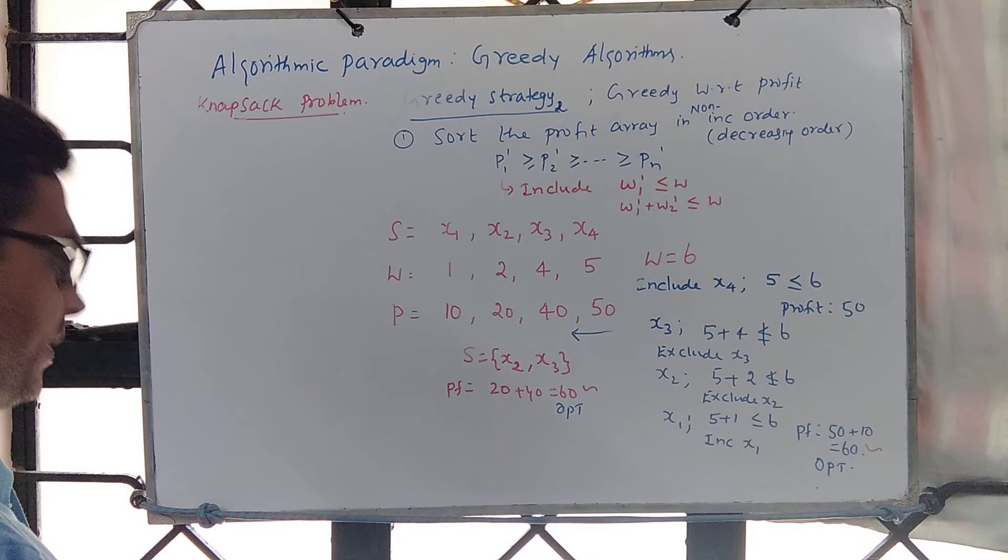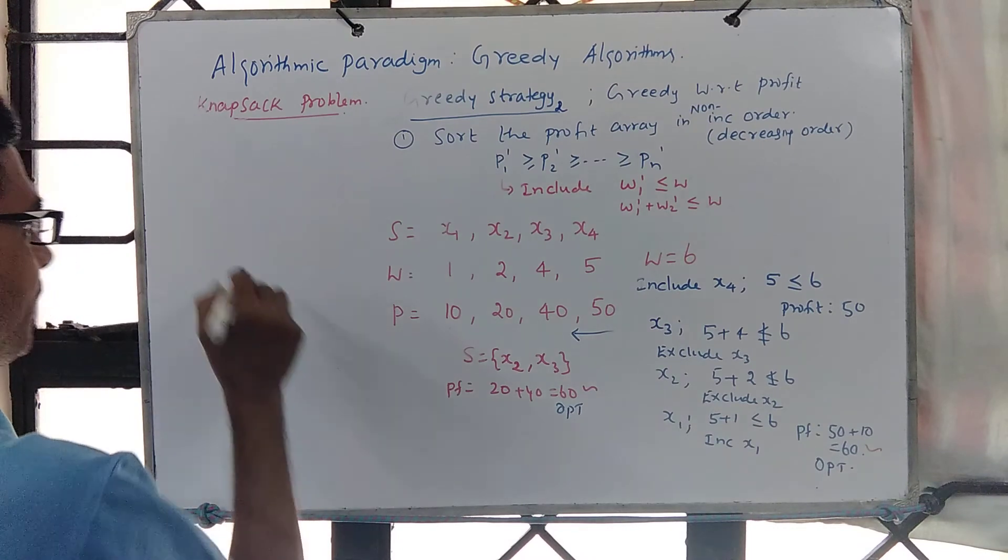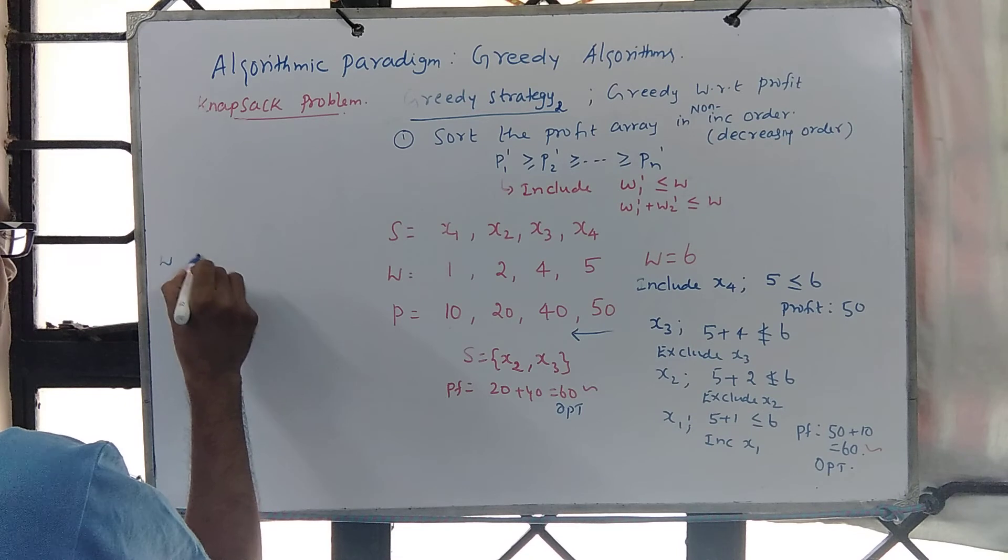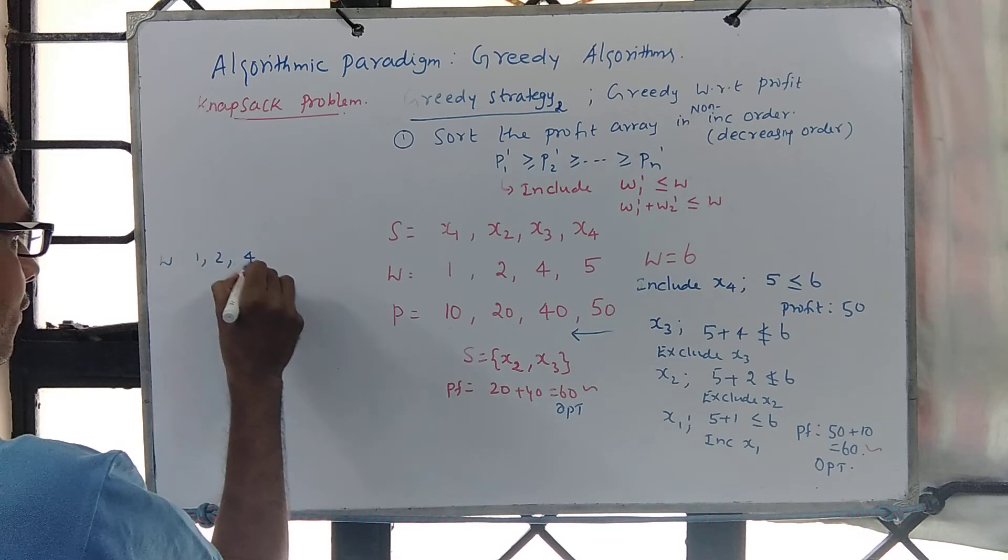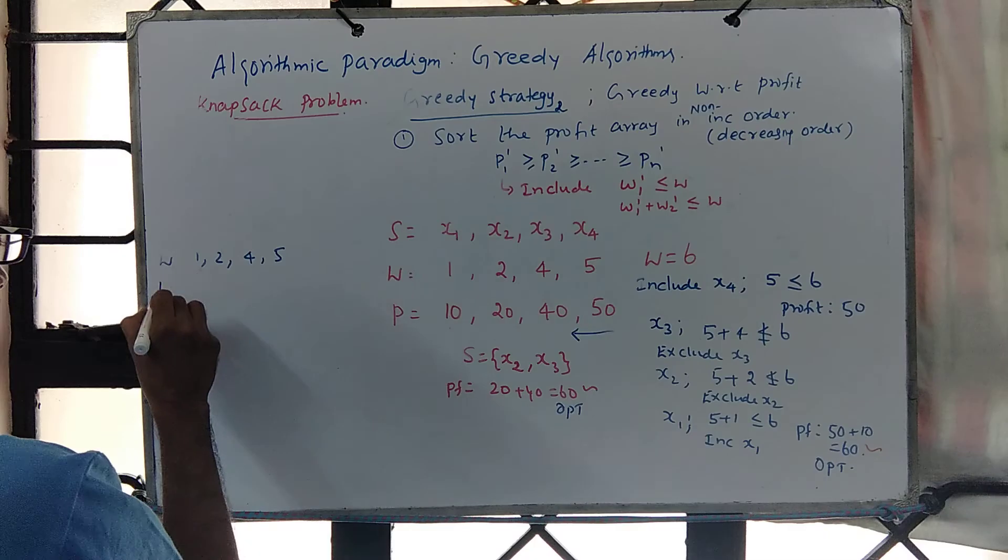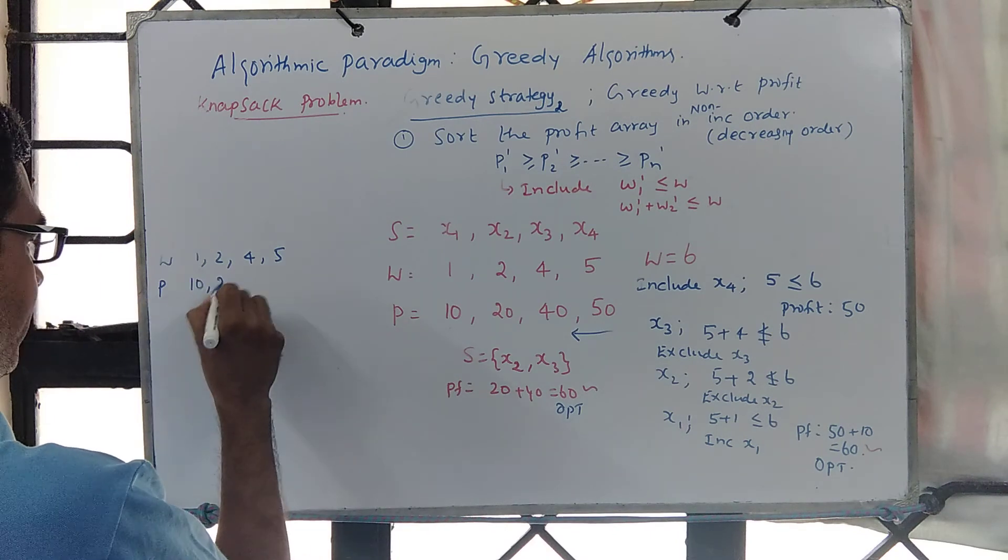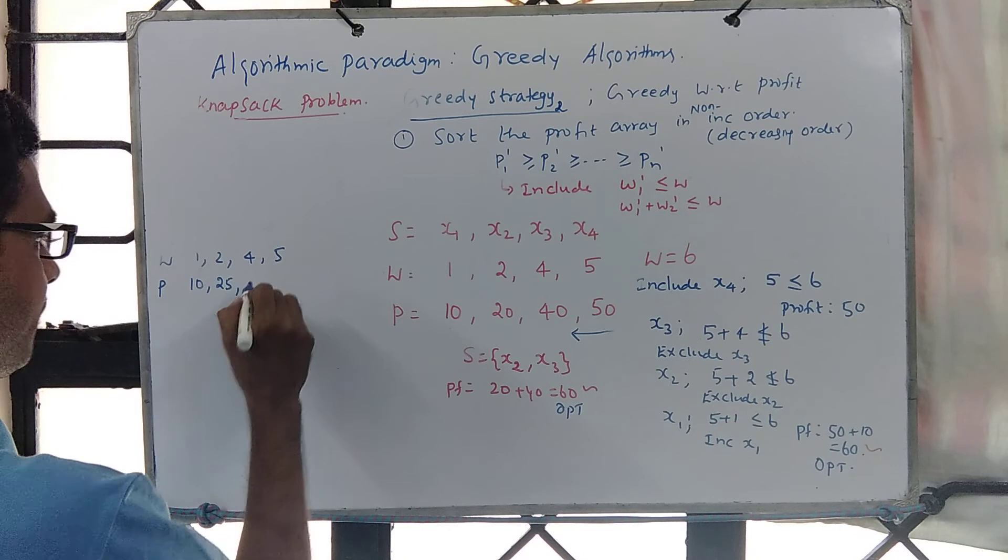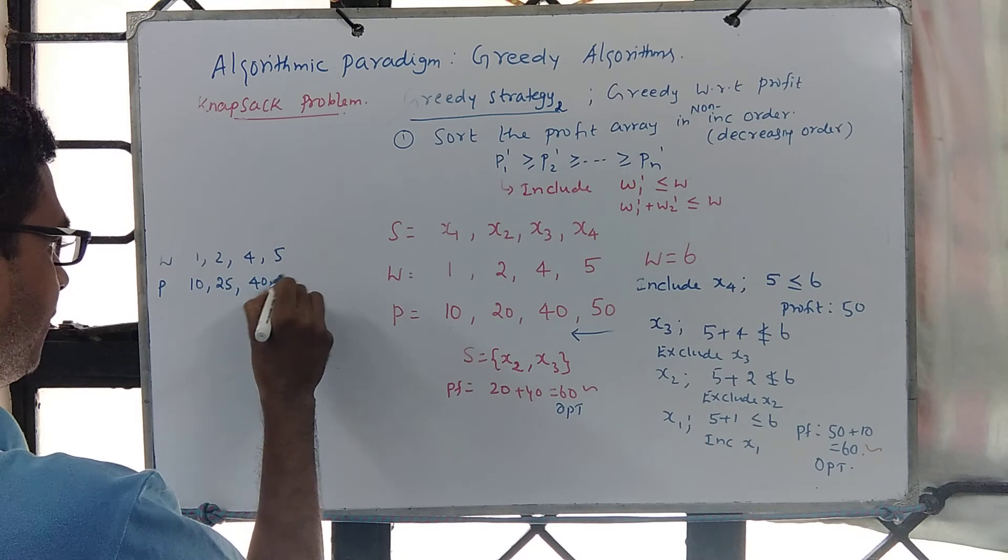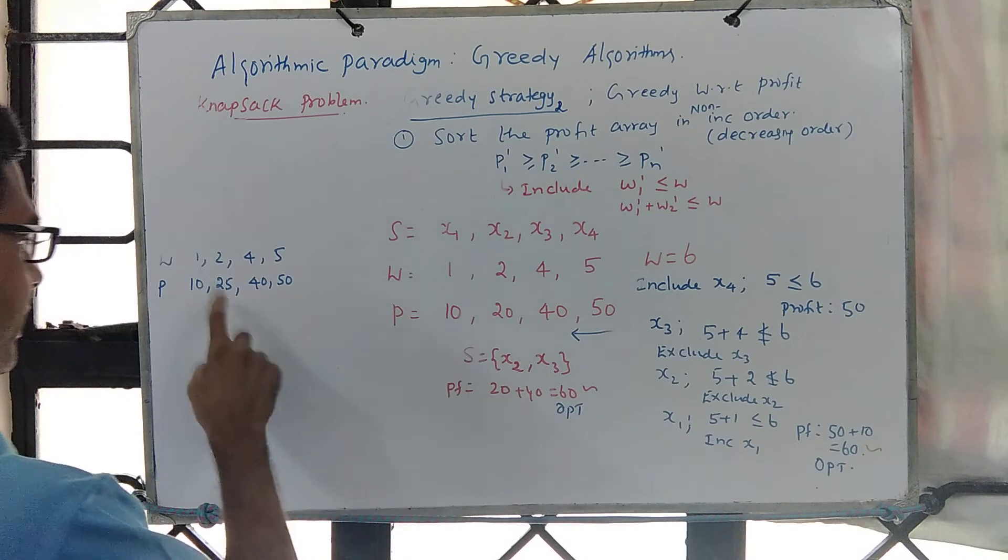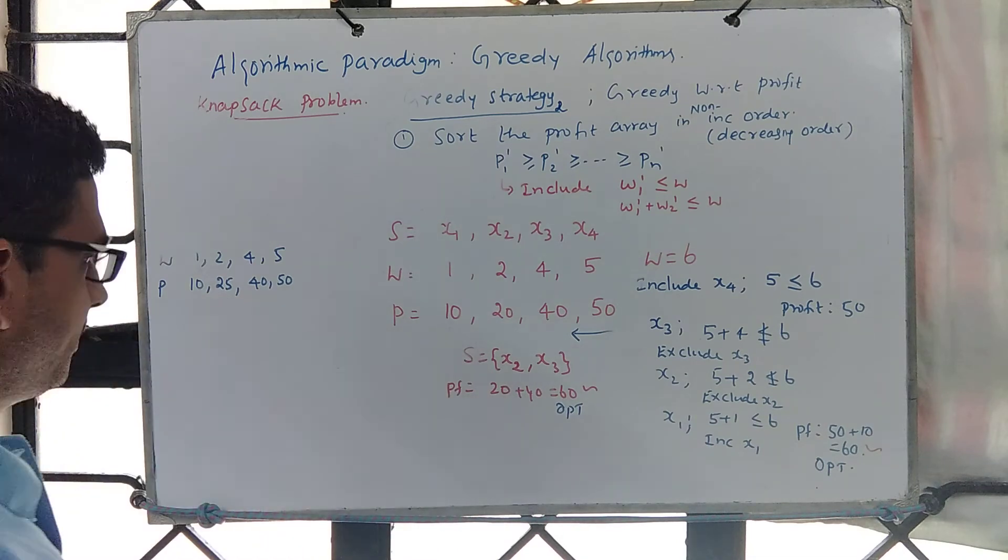So let's fine-tune this example. What we will do is w is 1, 2, 4, 5, and profit is 25, and profit is say 10 and say 25 and 40 and 50. So this alone I'm changing it to 25, rest remains the same.